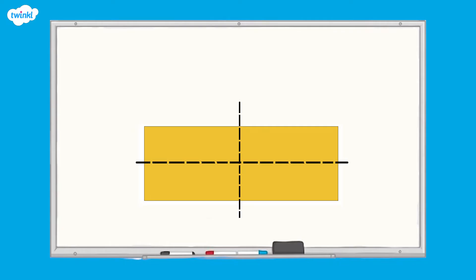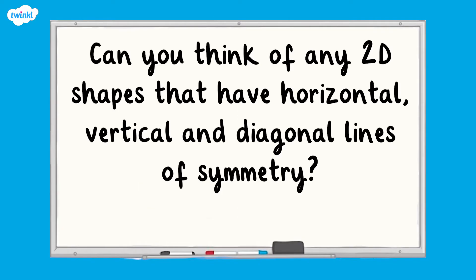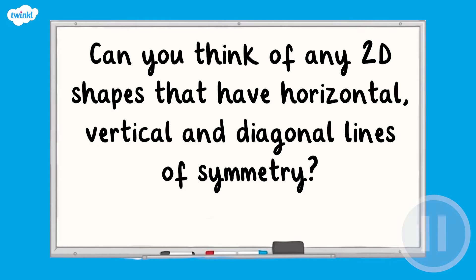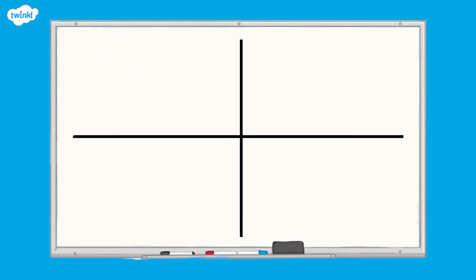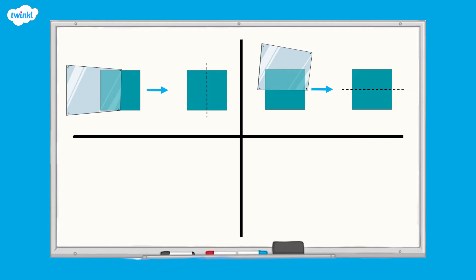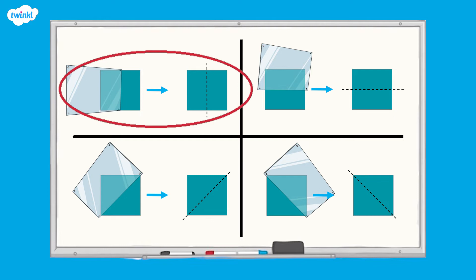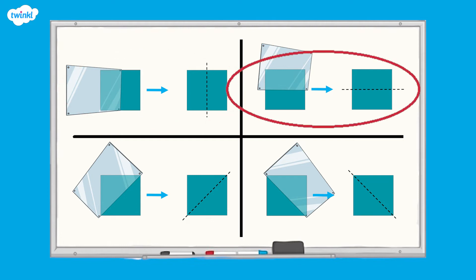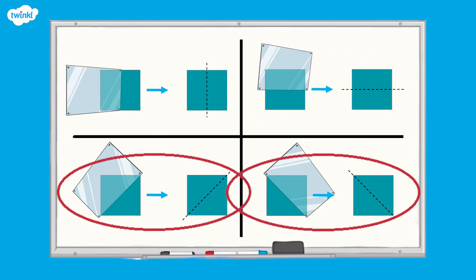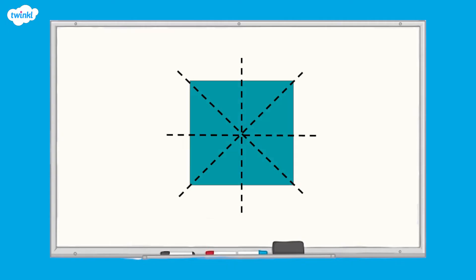Can you think of any 2D shapes that have horizontal, vertical and diagonal lines of symmetry? If we hold the mirror up to a square, the mirror divides the square into identical halves when we hold the mirror vertically, horizontally and diagonally. One line of symmetry divides the square in half vertically, one line of symmetry divides the square in half horizontally, and two lines of symmetry divide the square in half diagonally. Therefore, the square has four lines of symmetry.